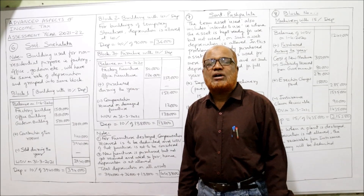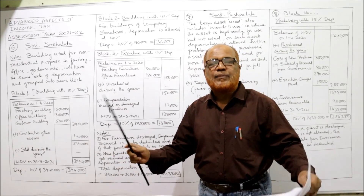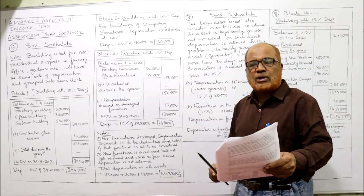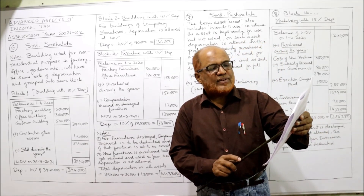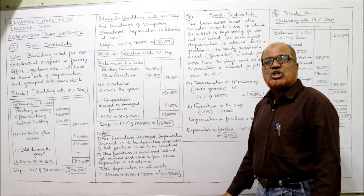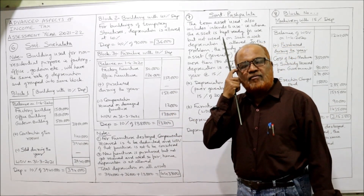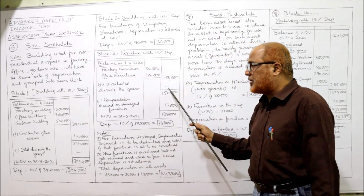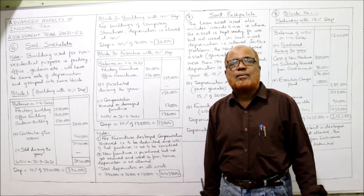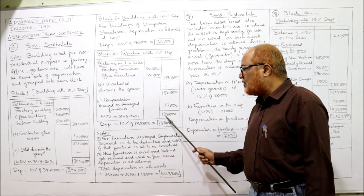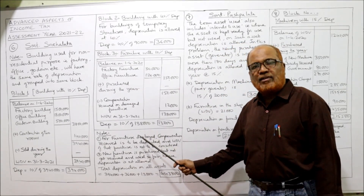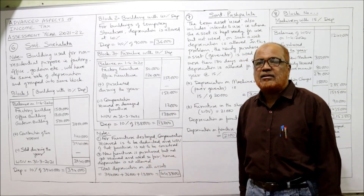Third block: furniture with 10% rate. Any type of furniture — office or factory — the rate of depreciation is only 10%. Opening WDV on 1st April 2020: office furniture Rs. 30,000, factory furniture Rs. 1,20,000, total Rs. 1,50,000. No purchase of furniture — the order was placed but not received, so not taken. Deduct compensation received on damaged furniture: Rs. 12,000. Closing WDV on 31st March 2021 is Rs. 1,38,000. Depreciation at 10% = Rs. 13,800.